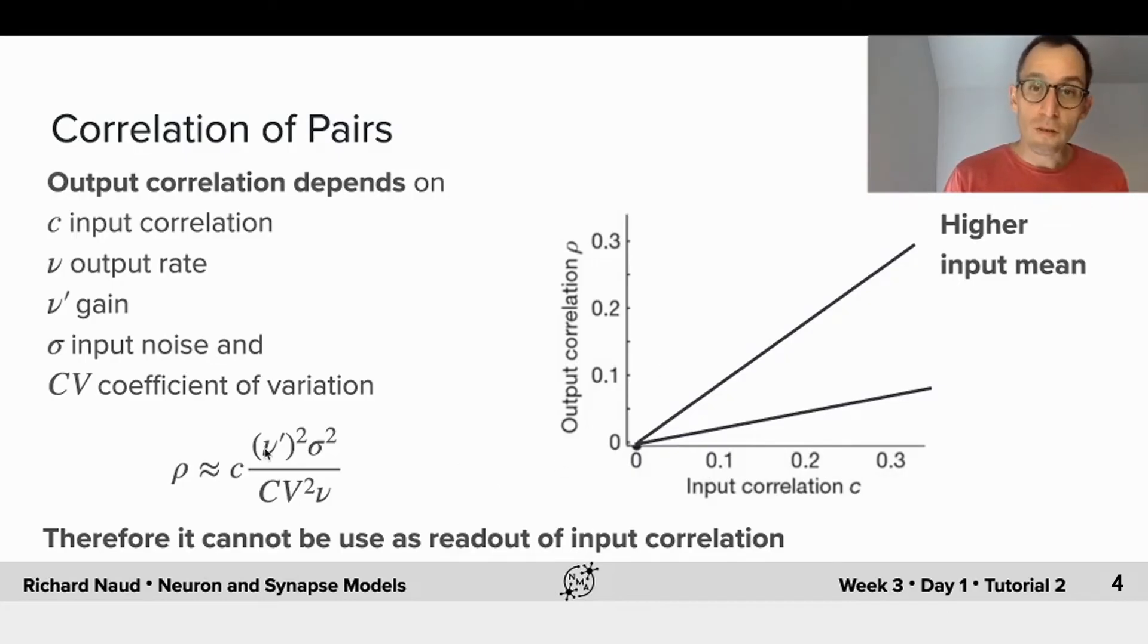The equation which one can prove is shown here. The output correlation is proportional to the input correlation times a slope factor which depends on the gain of the neurons, the noise that is present, the CV of the neurons, and the average rate.